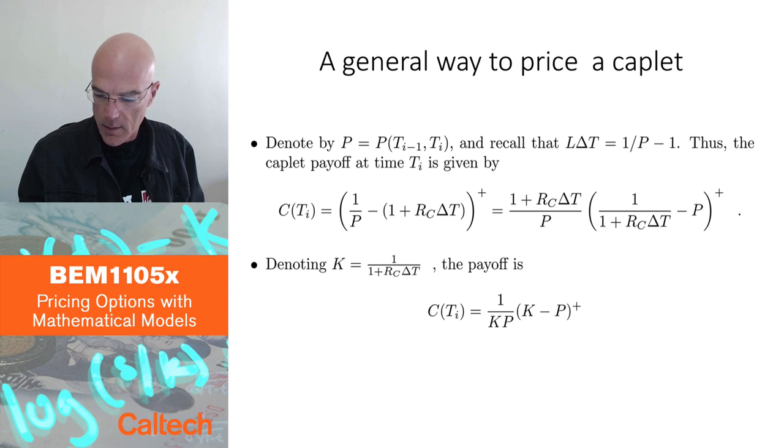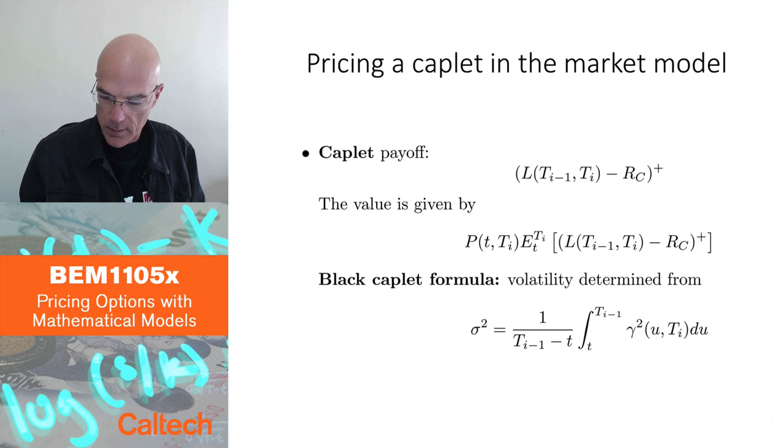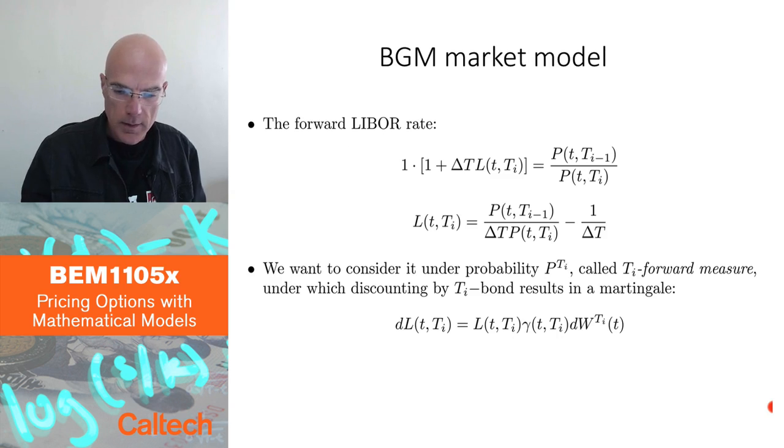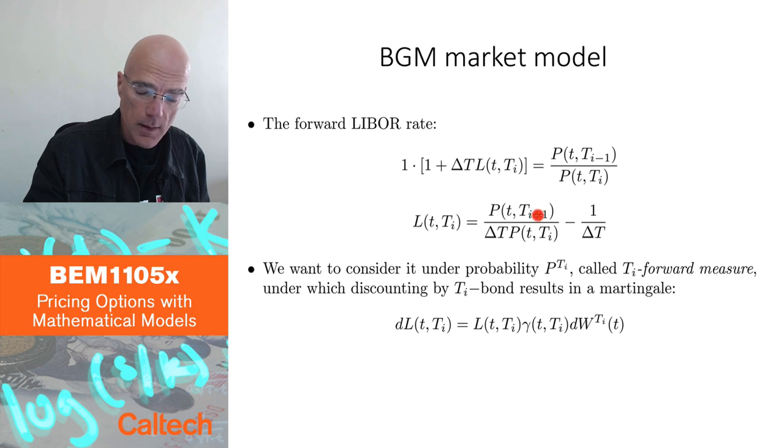This is, why is this? It's not, I didn't tell you exactly why this is. Because if I put small t equal to Ti minus 1, then this becomes 1. If I have P of Ti minus 1, Ti minus 1, that's just the value, the payment of the bond at maturity, which I'm assuming is 1. So that's why this becomes just 1.